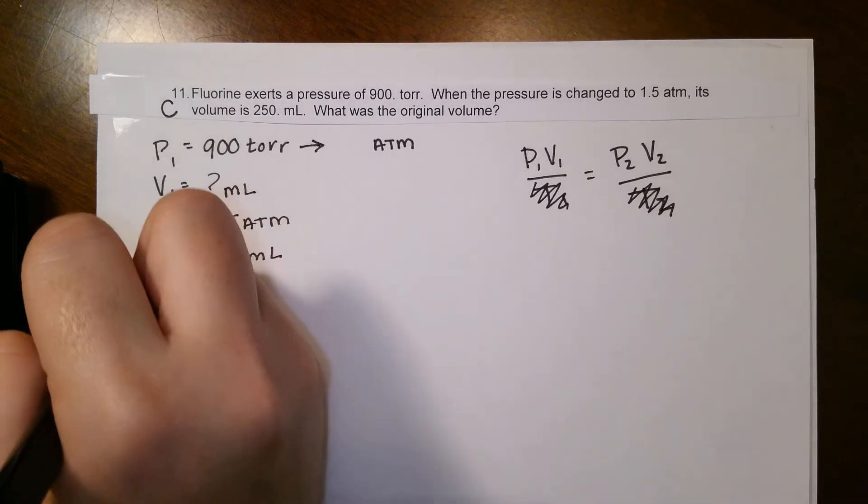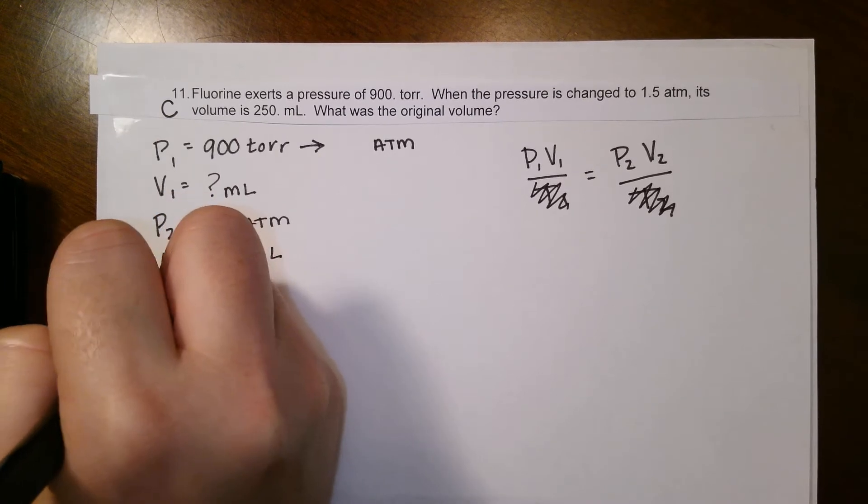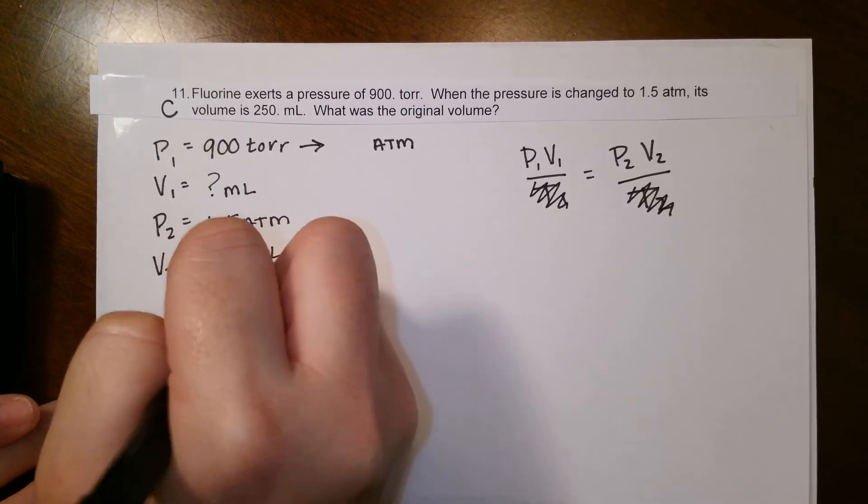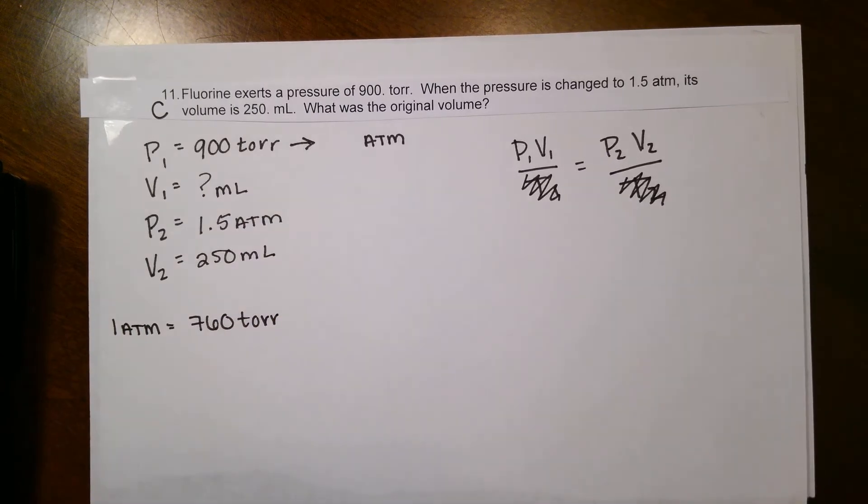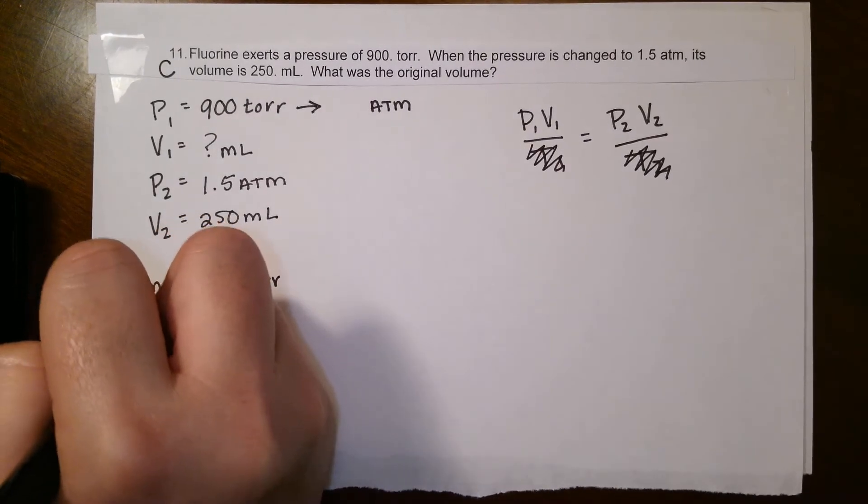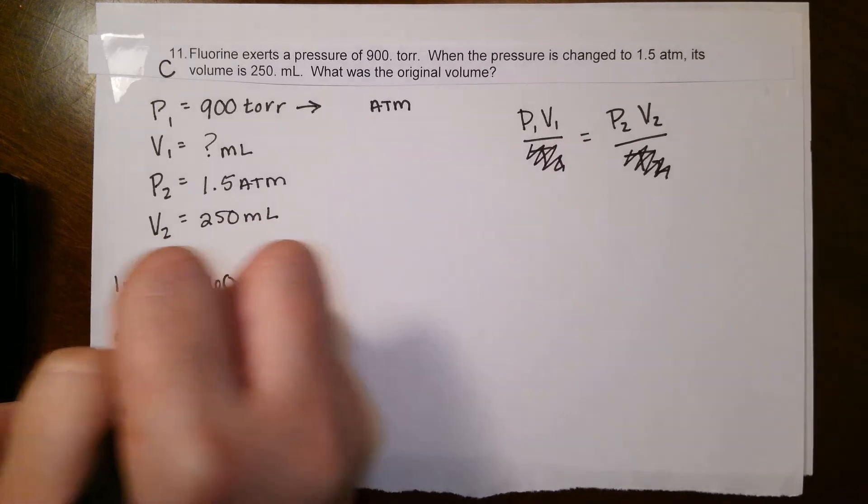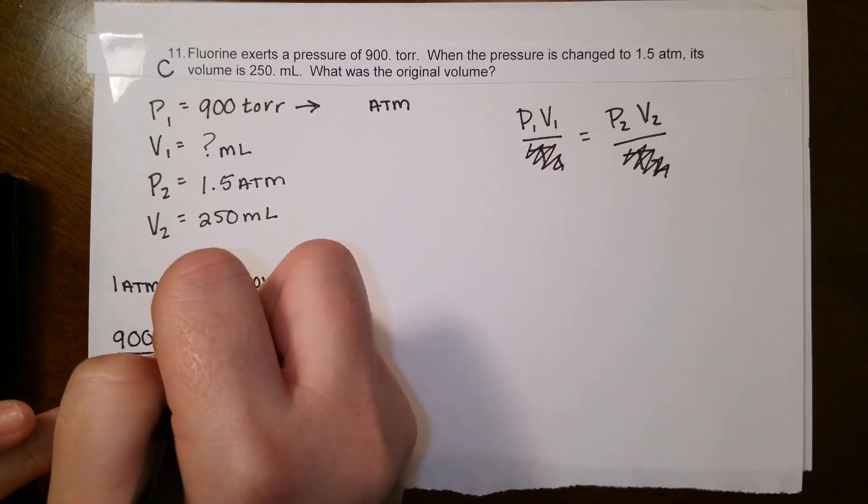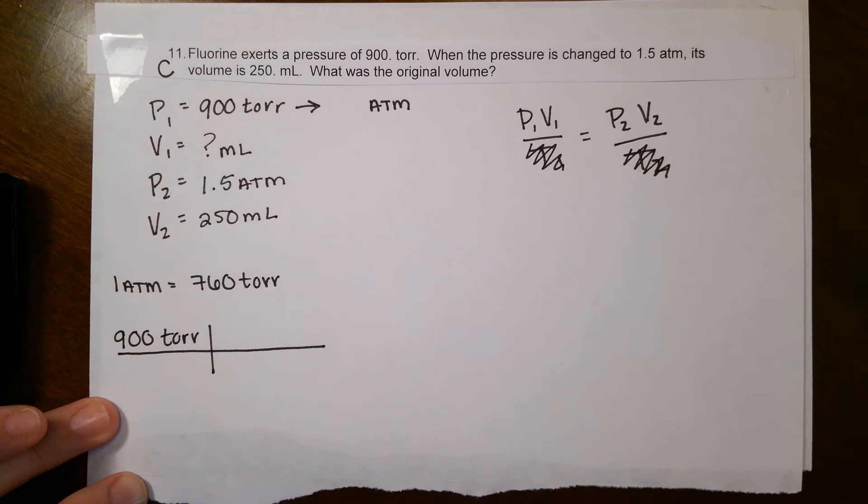So to convert torr, we have to know that conversion, that 1 atm is equal to 760 torr. This is one of the many conversions that's going to be given to you. You always start with your given, so our given for this one is 900 torr, followed through just like any of our other dimensional analysis problems.